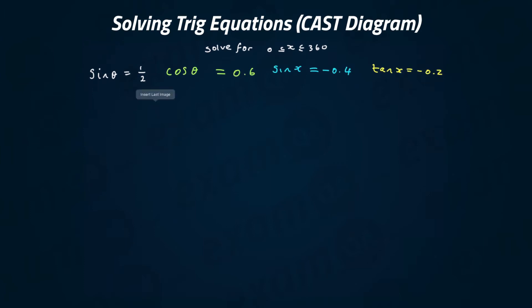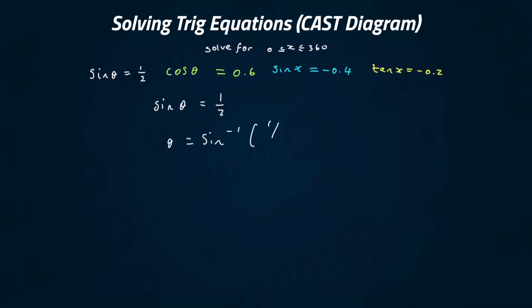The first question says: sine theta equals a half — solve for theta. Just like in GCSE, we're going to work out the first value by doing shift sine. So theta equals shift sine of a half. If you put that in your calculator, or you remember from GCSE, that is 30 degrees.